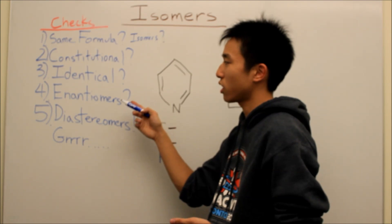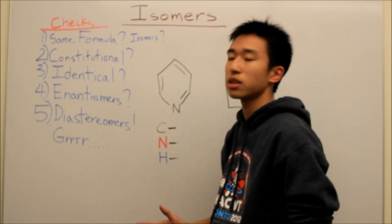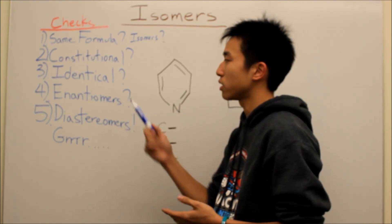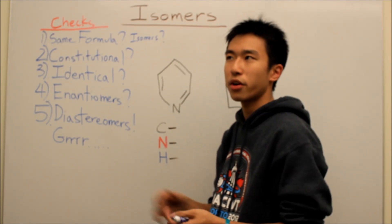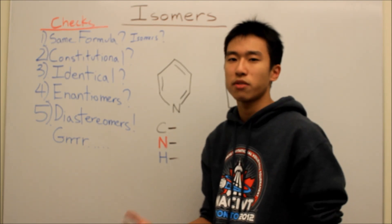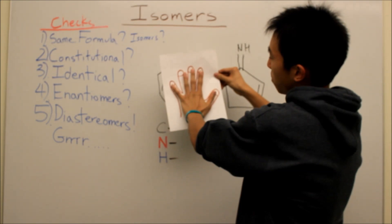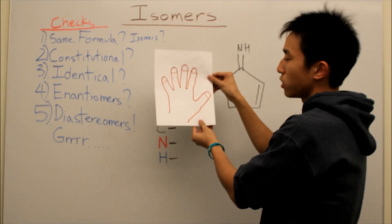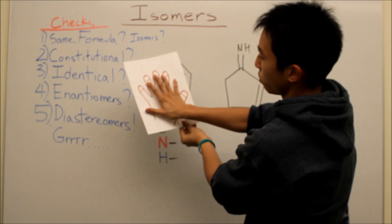The next check is the enantiomer check, which you do after the identical check. In this one, you basically see if your molecule is a mirror image. Enantiomers are molecules that are mirror images of each other but are not superimposable. When you hear 'superimposable,' just think of identical. If you look at this example with my hand — this is my left hand — if you're looking for a superimposable molecule, it has to fit in perfectly. And if you see my right hand, no matter what I do, it can't fit into this mold perfectly.